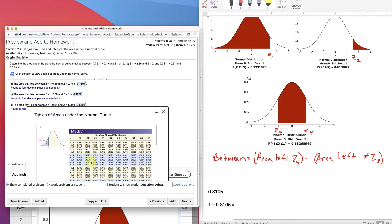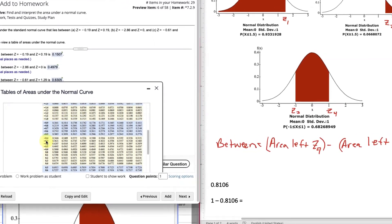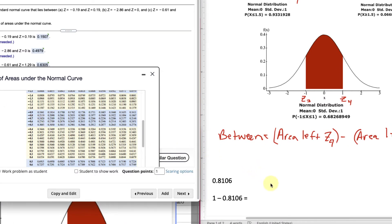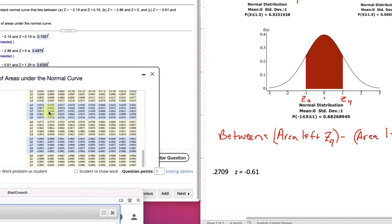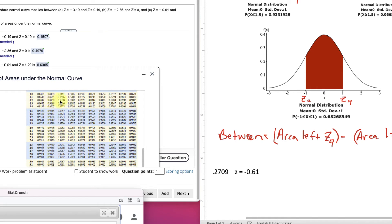Now let's do it the longer way using the table. We need negative 0.61 first. So negative 0.601. So 0.2709. 0.2709. That's z equal to negative 0.61. That's to the left, remember. Okay. That'll be our left boundary. Now the other one. 1.29. Go down to 1.29. 0, 1, 2, 3, 4, 5, 6, 7, 8, 9. .9015. .9015. That's for z equal to 1.29.